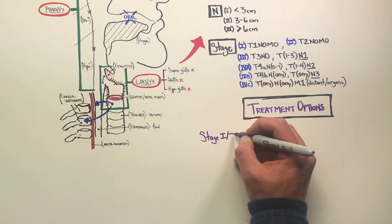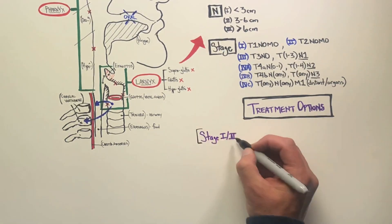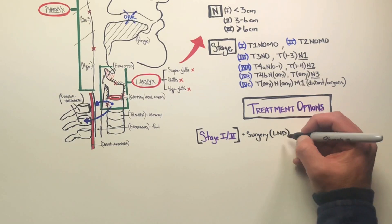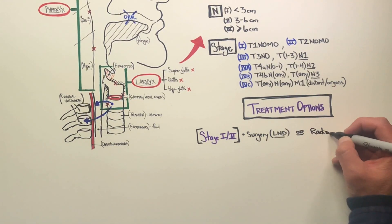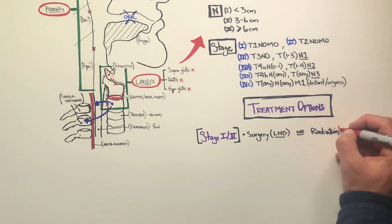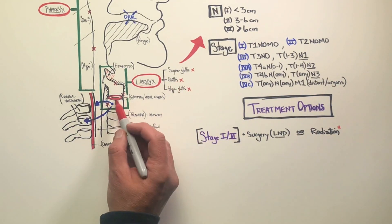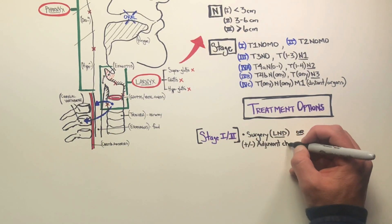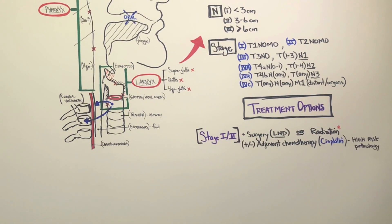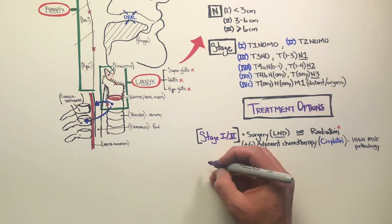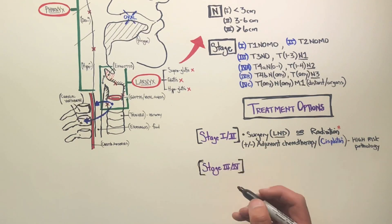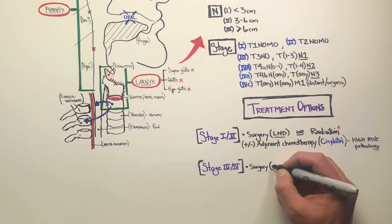Conventional treatment options are based on stage. For stage 1 and stage 2, the earlier stages, surgical resection of the tumor with lymph node dissection is often recommended. Radiation can also be considered to protect the glottis and vocal cords. Adjuvant chemotherapy — adjuvant meaning post-surgical — with cisplatin, which has been the historical standard and is still used today, can be used in high pathology, high-risk cases.